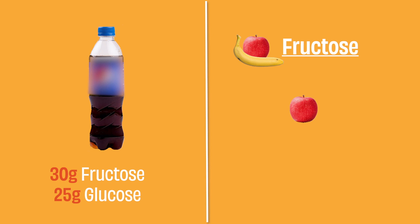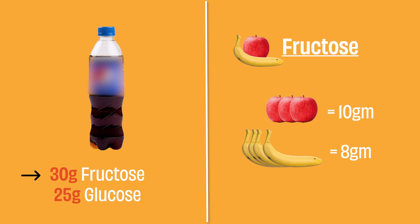Compare that to some of the most fructose-dense fruits: one apple has 10 grams of fructose, one banana has 8 grams. You'd need to eat three to four apples just to match the fructose in a bottle of soda — to say nothing of the 25 grams of glucose on top. This also takes us back to the question of serving sizes discussed in our previous video on nutrition tables.